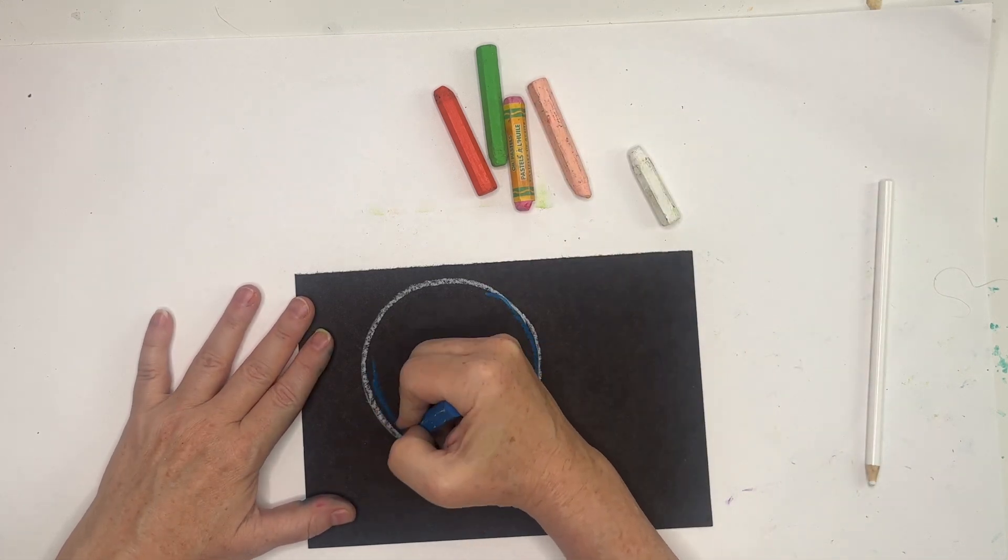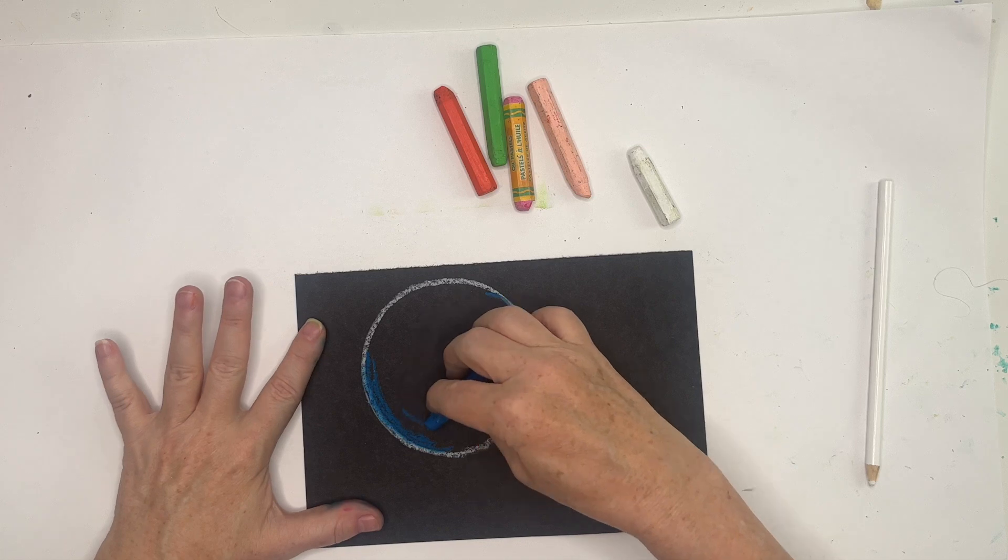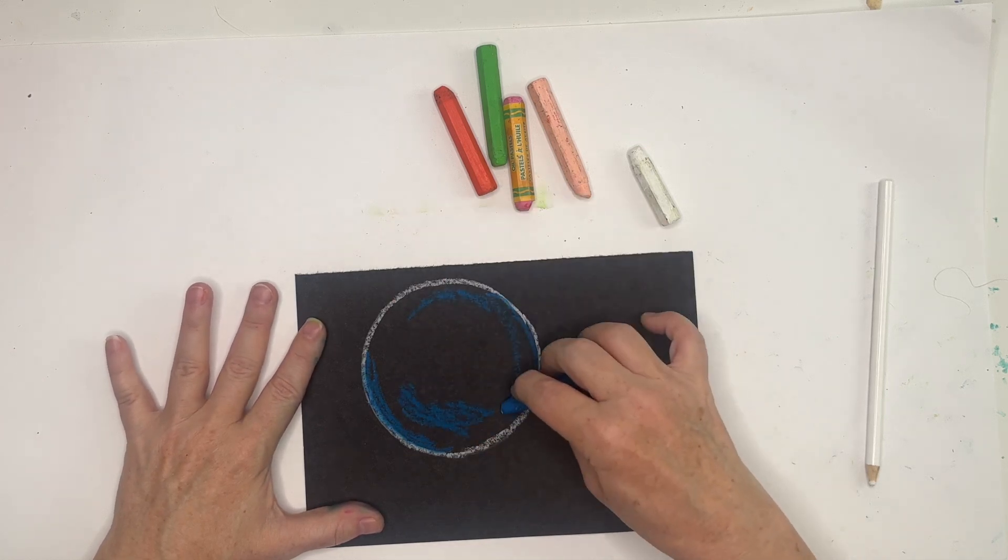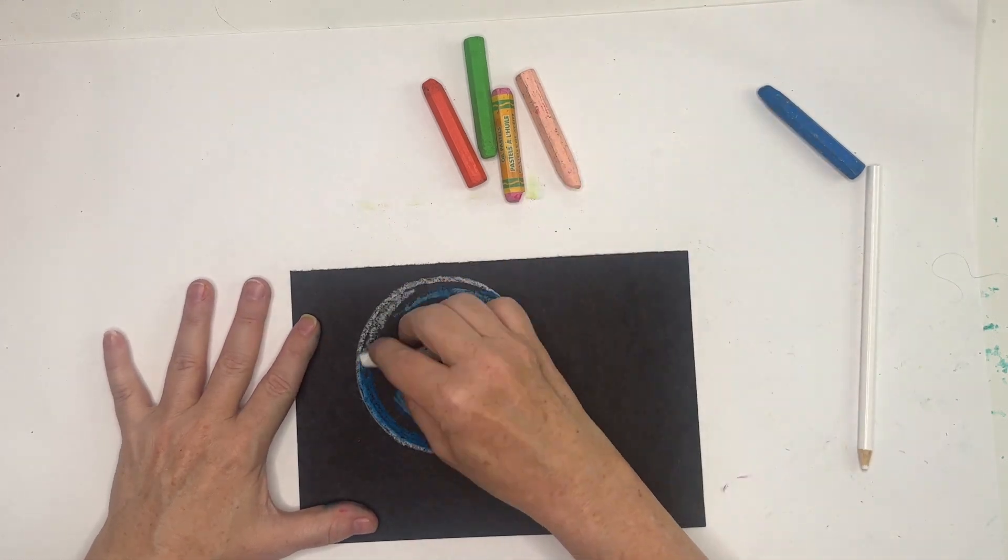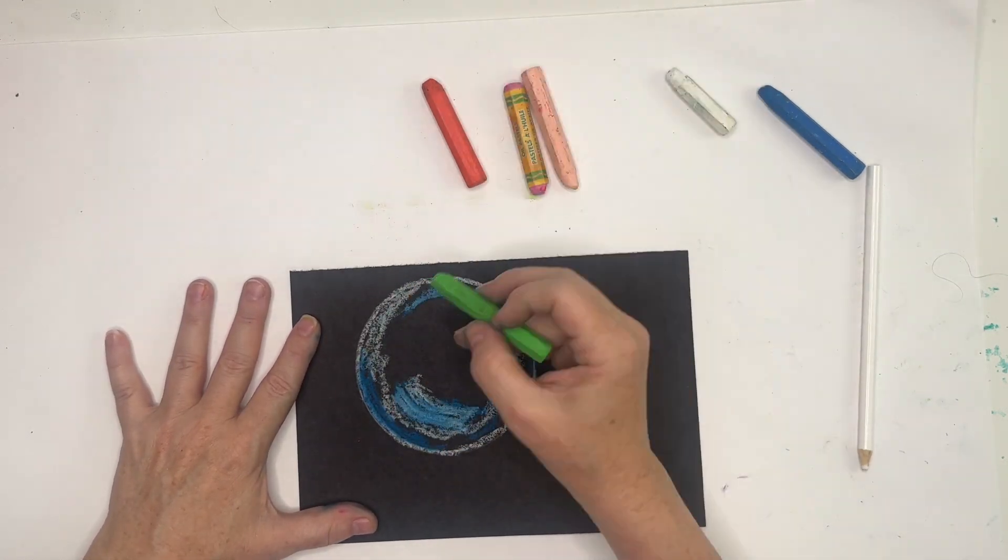Now I'm going to swish around some colors, staying in a circular motion. You don't want to color back and forth or you'll just lose the depth of your bubble, making them just flat circles. We don't want that, we want bubbles.